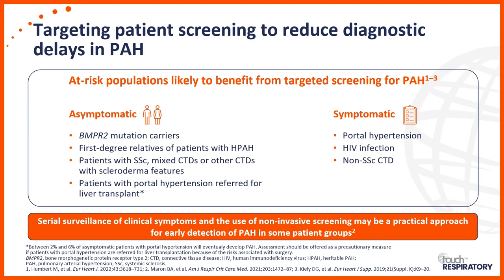There are subgroups in whom screening is recommended, usually by echocardiogram on a yearly basis. If people are asymptomatic but in high-prevalence at-risk groups — such as BMPR2 mutation carriers, first-degree relatives of people with heritable PAH, patients with connective tissue disease especially with a scleroderma component, and patients with portal hypertension referred for liver transplant — those people should be screened for pulmonary hypertension.